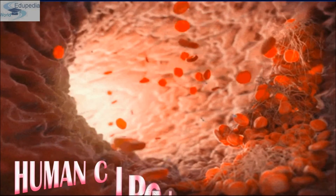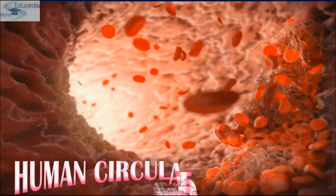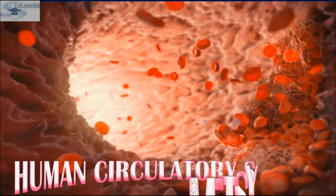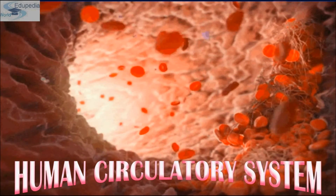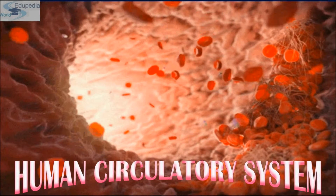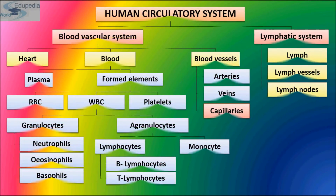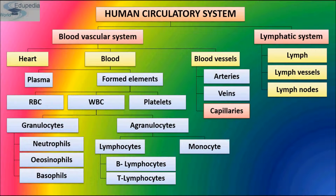The human circulatory system follows a double circulatory pathway. It is of two types: the blood vascular system and the lymphatic system.